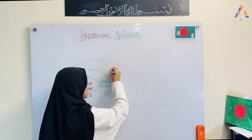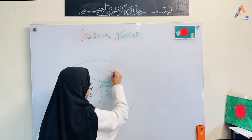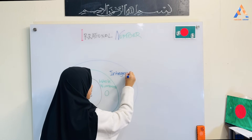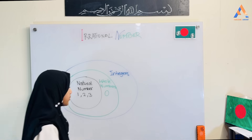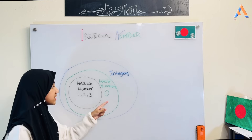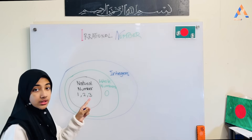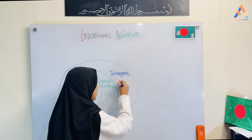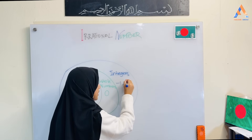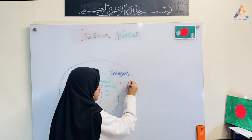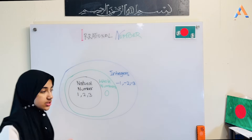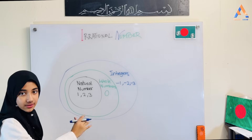Then I will write the integers. There are examples: not only 0, 1, 2, and 3, but also negative numbers — negative 1, negative 2, negative 3. So integers include all of these.